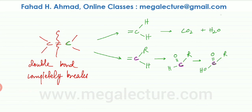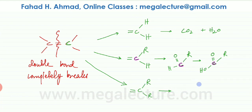Scenario three: you have a double bond, the carbon breaks away, and that carbon was bonded on both sides by carbon chains. This type of fragment would change into a ketone — the carbon in the middle changes to a double bond O, with R groups on each side. So there are three different scenarios.